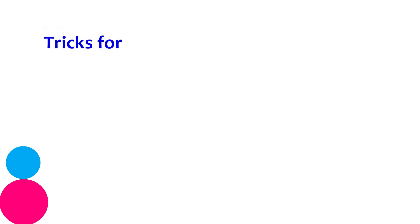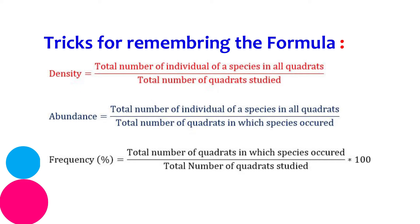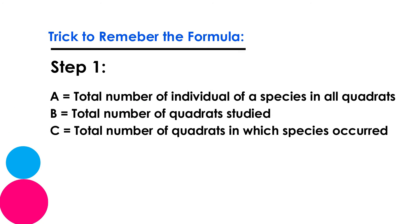In this video, I'd like to share a trick for how to remember these formulas without getting mixed up or confused. The trick involves two simple steps. Step one, which you must memorize: let A equal the total number of individuals of the species in all quadrats; let B equal the total number of quadrats studied; and let C equal the total number of quadrats in which the species has occurred.